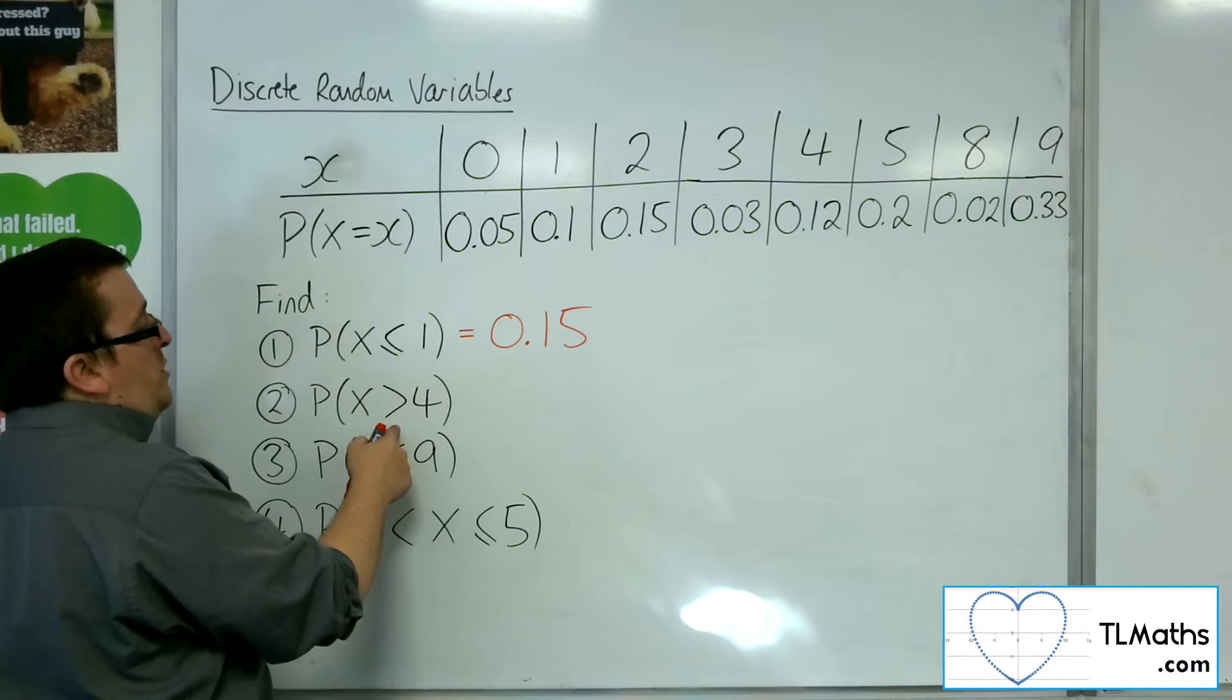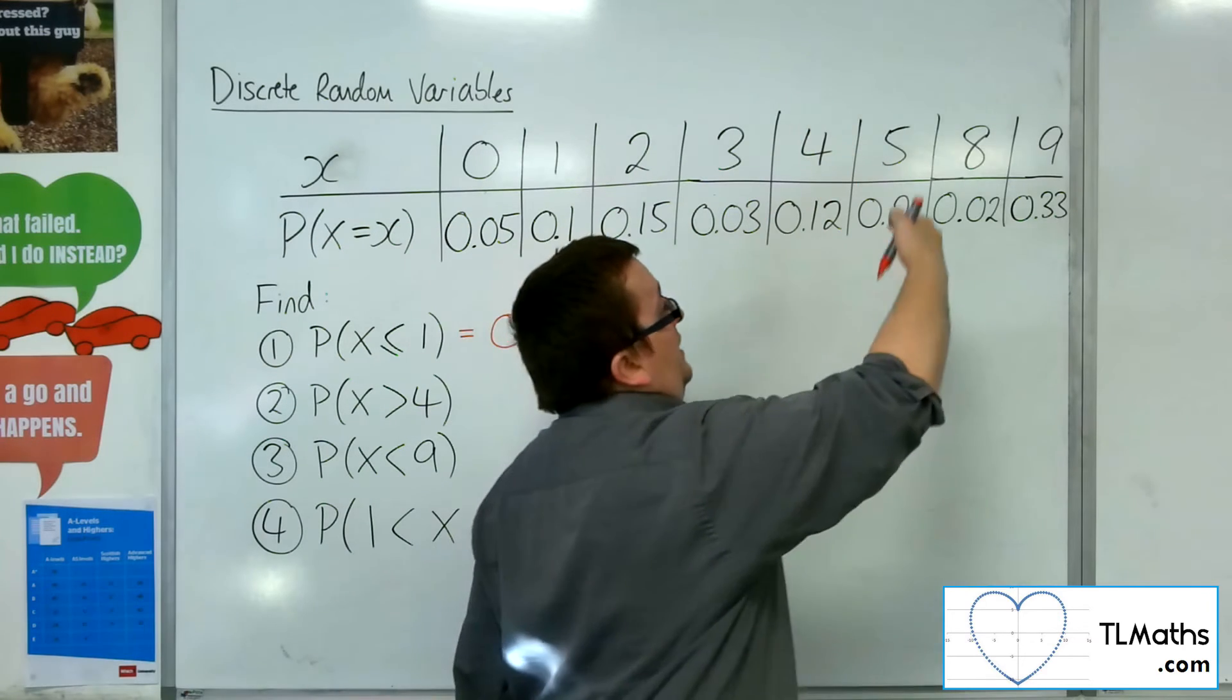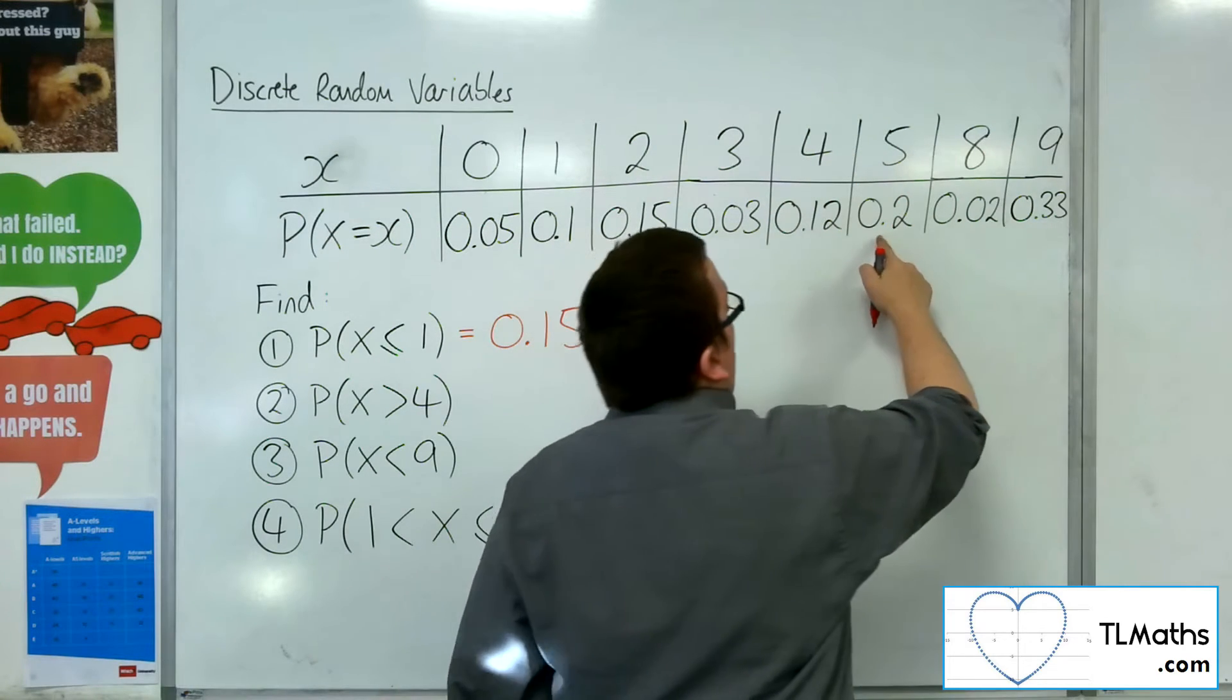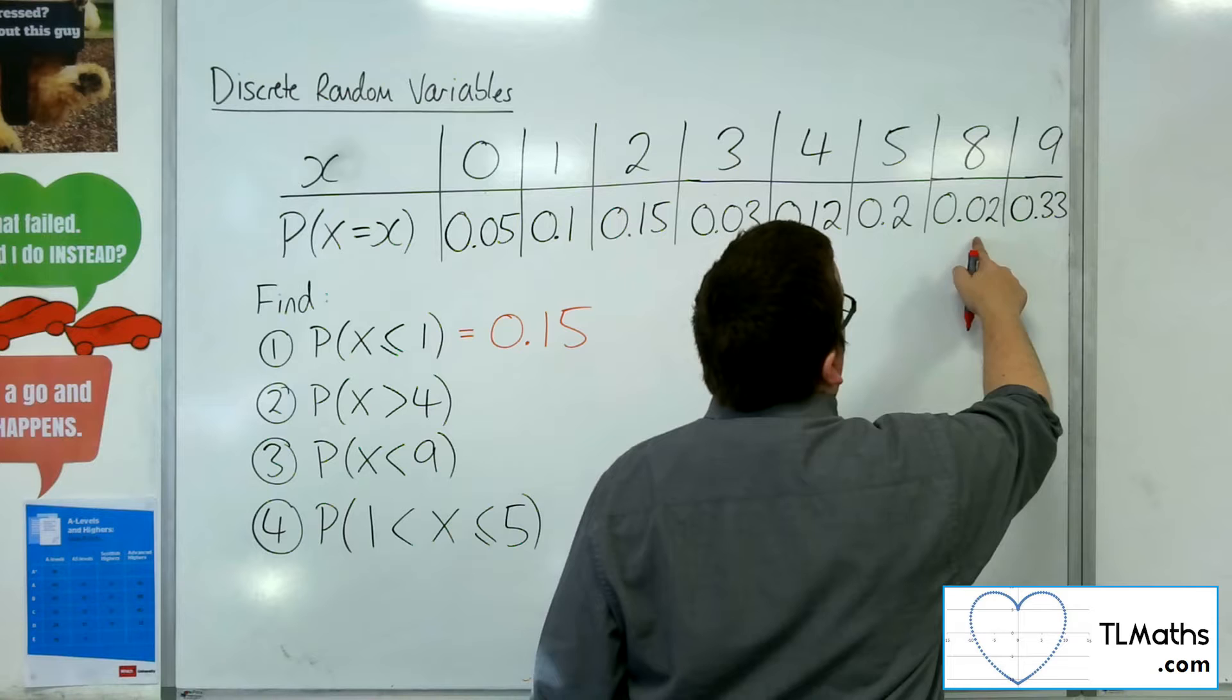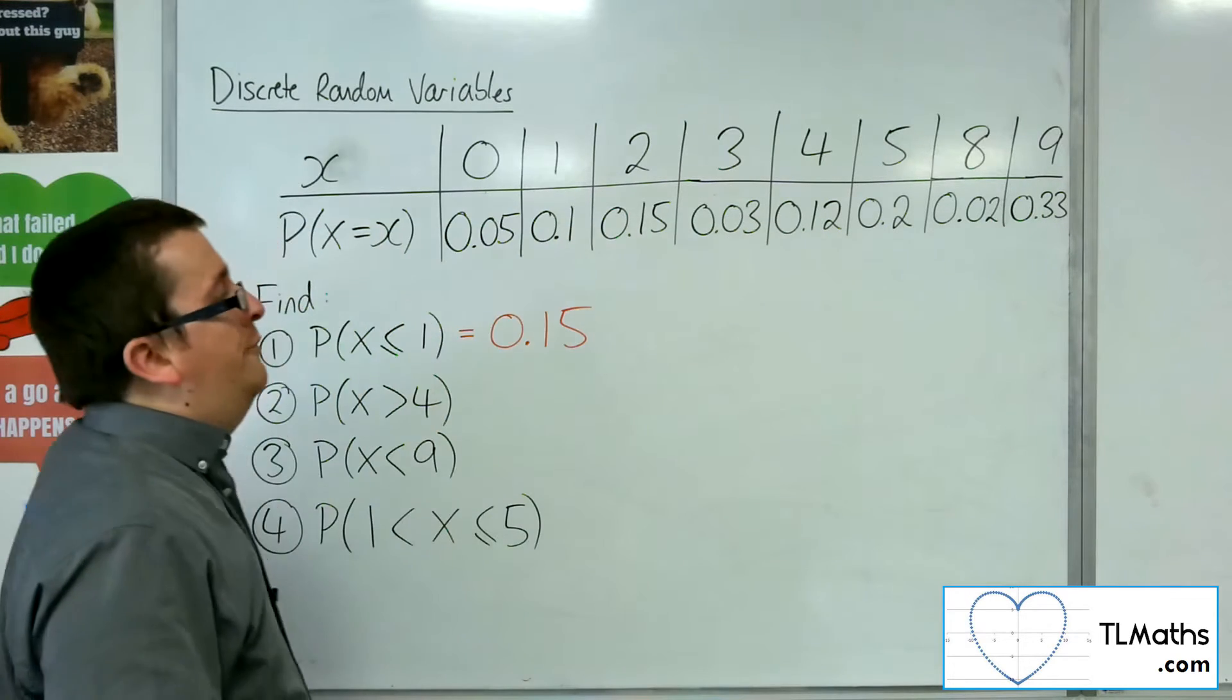What's the probability of scoring greater than 4? So that means 5, 8 or 9. So we've got 0.2 plus 0.02 plus 0.33, so that would make 0.55.